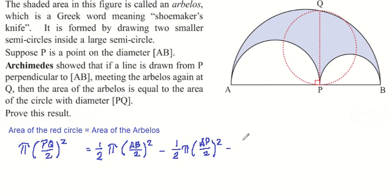minus ½π times the radius of this small semicircle, so ½π(BP/2)².